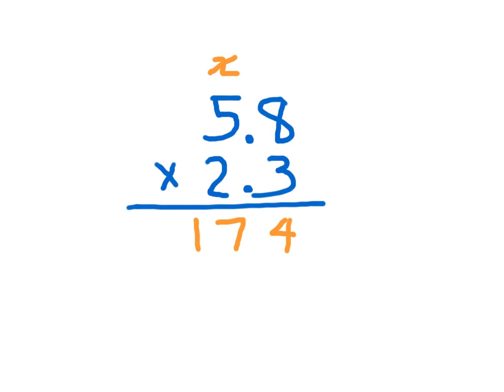Now I'm working with that 2. And that 2 is worth 20, so I place a 0. 2 times 8, which is 16. Place the 6, regroup the 1. 2 times 5, which is 10, plus 1, which is 11. And then I add those numbers together.